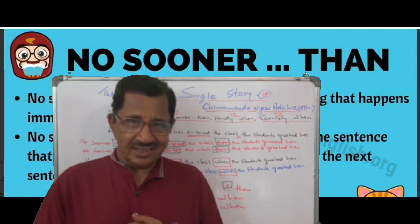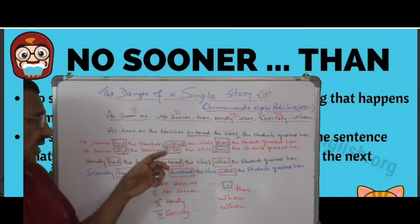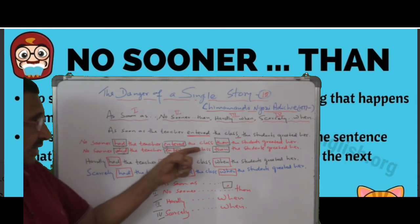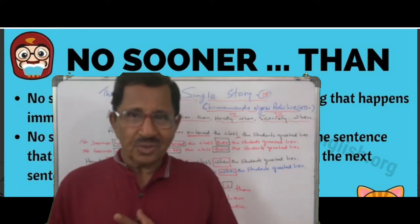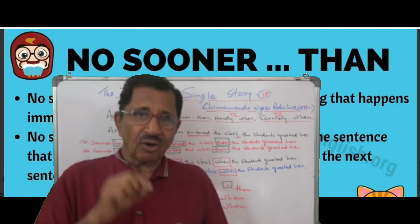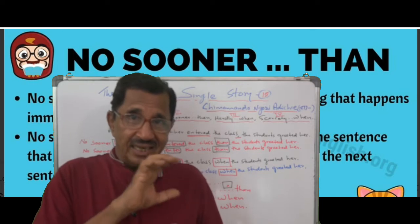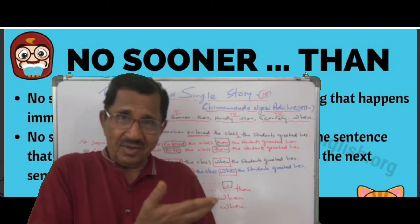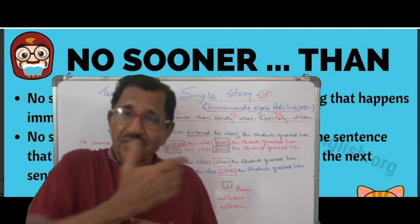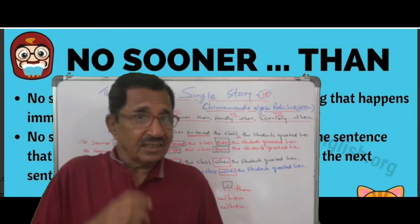There is a point to remember: 'as soon as the teacher entered' — see the sign. Now, 'no sooner had the teacher entered the class, than.' So when you start with 'no sooner' — this is negative — immediately after the negative there should be an auxiliary. That's why: 'no sooner, had.' As soon as: 'ended.' But when you use 'no sooner,' you use the past perfect form — that is 'had ended.' And 'had' is an auxiliary.